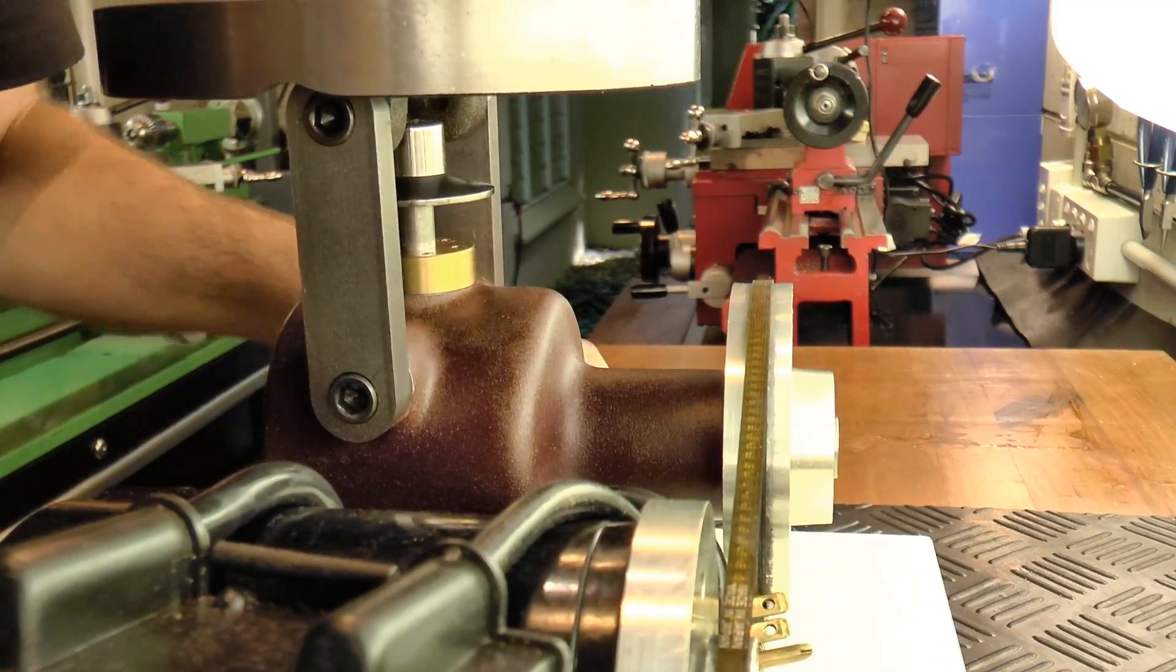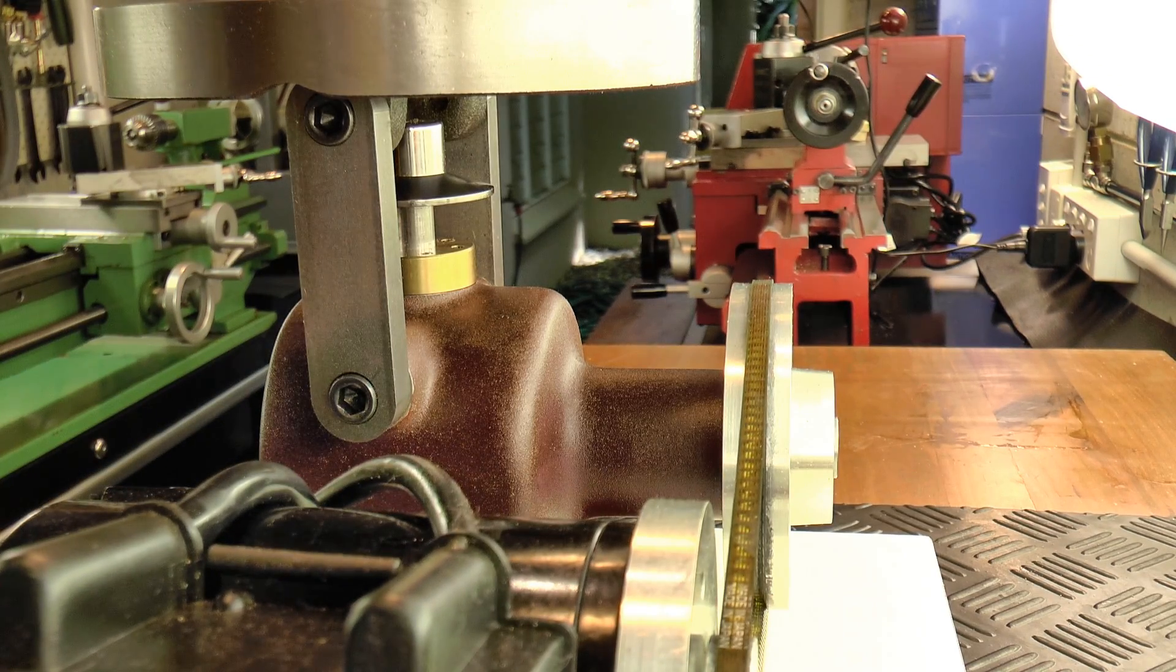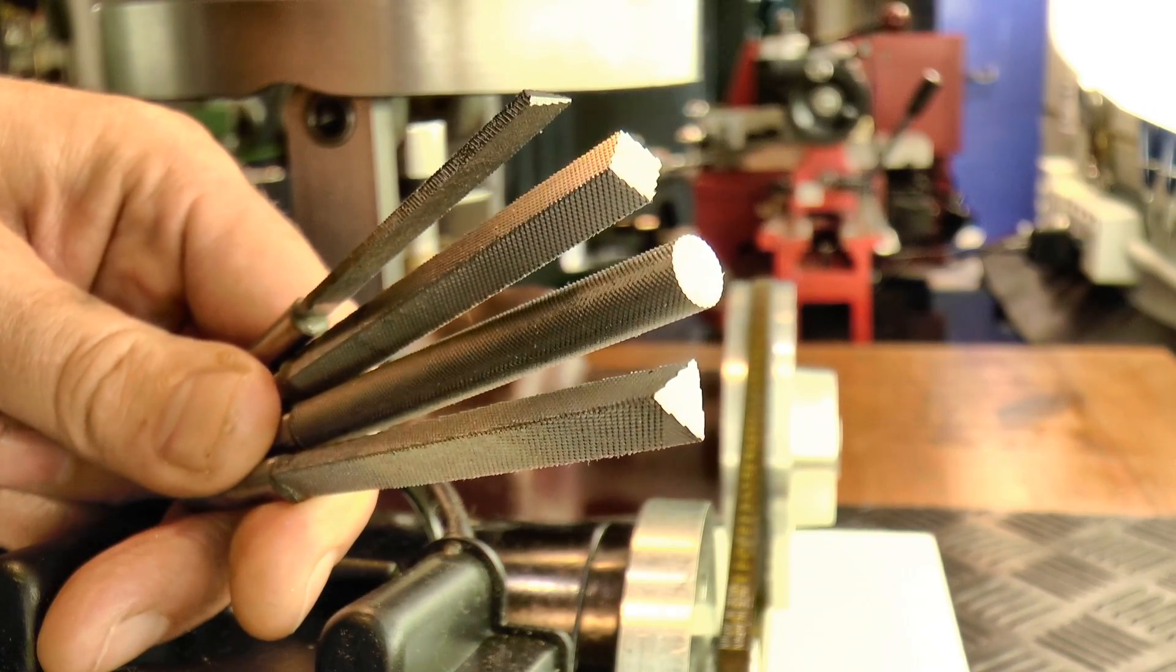The next step was to tidy up the scroll saw cut with this bench filer. I mainly used these number two cut files, which are good at removing metal fast and leave quite a good finish.